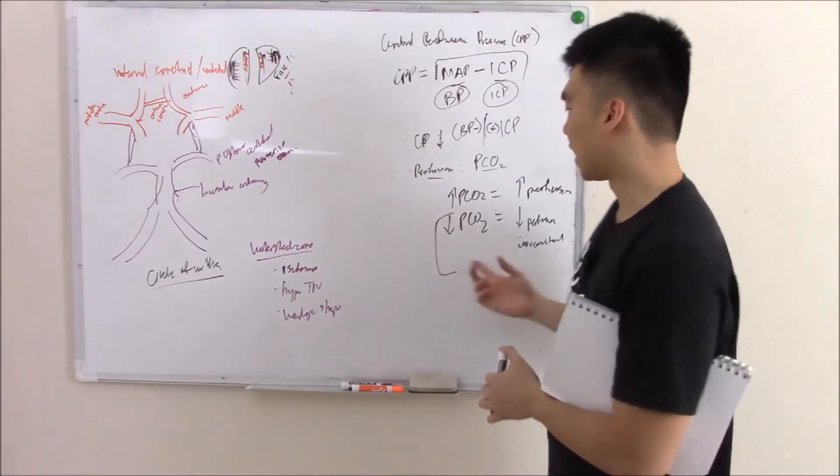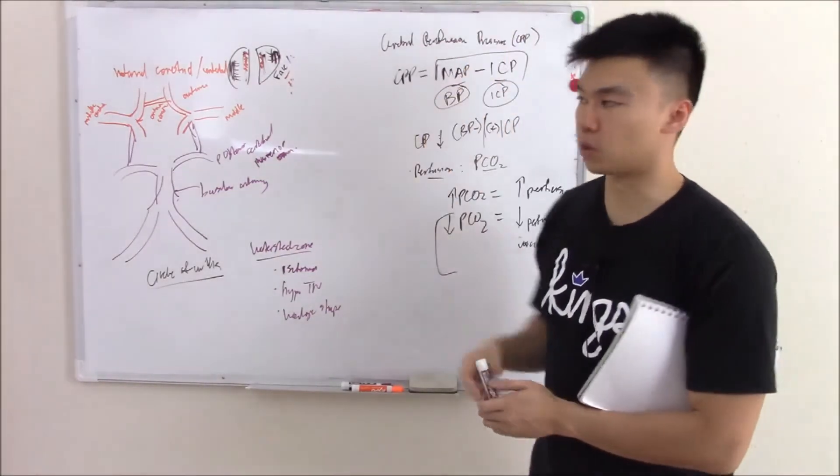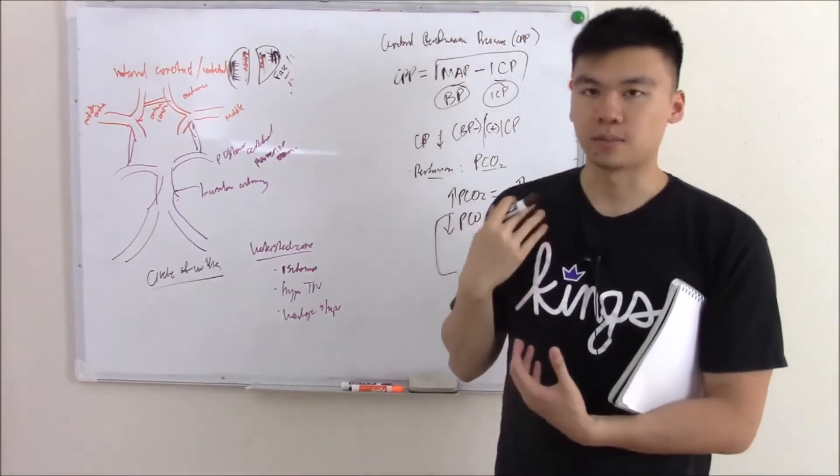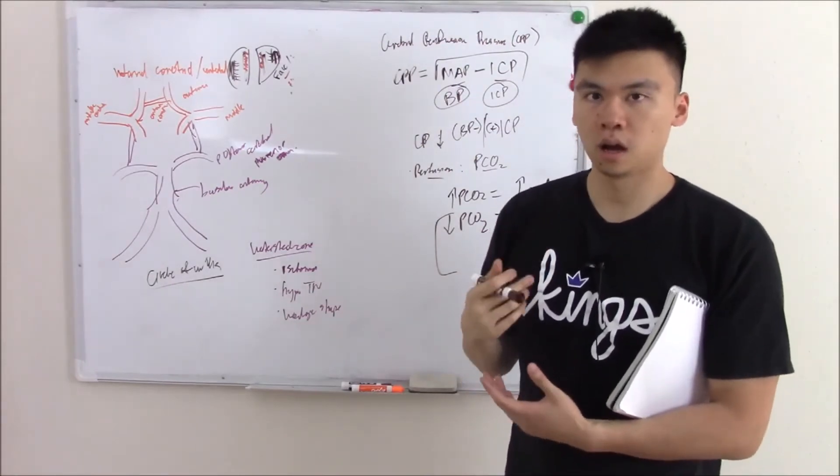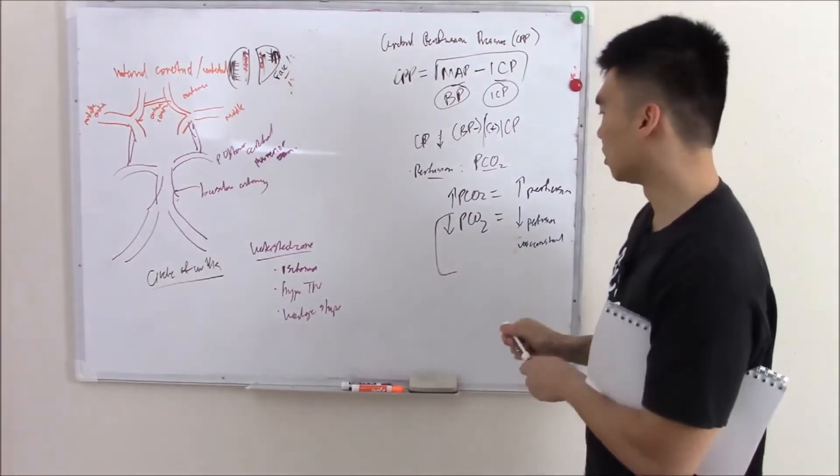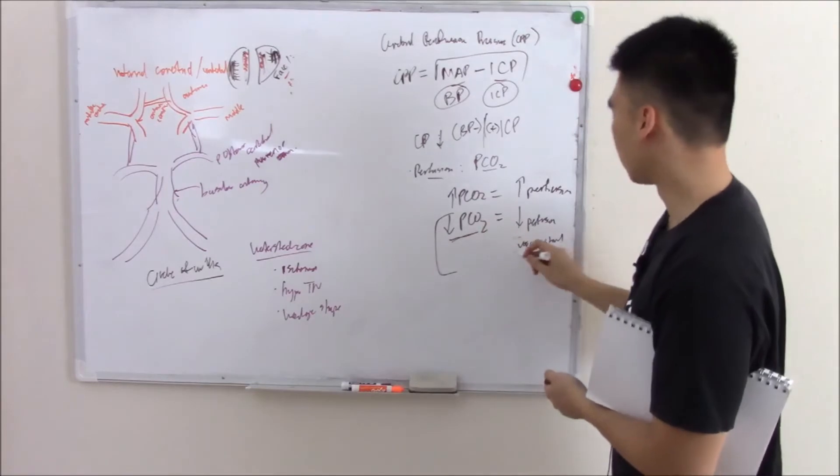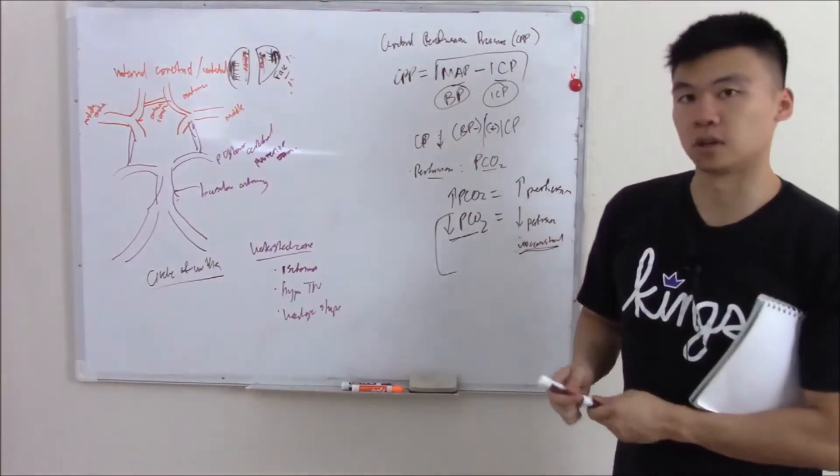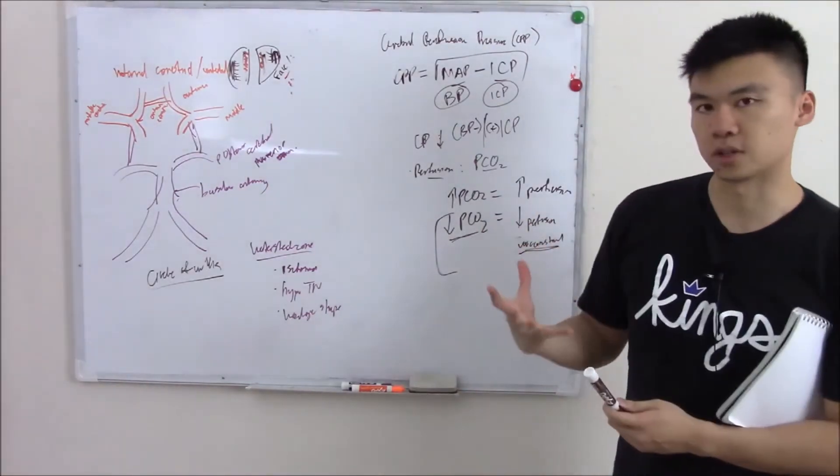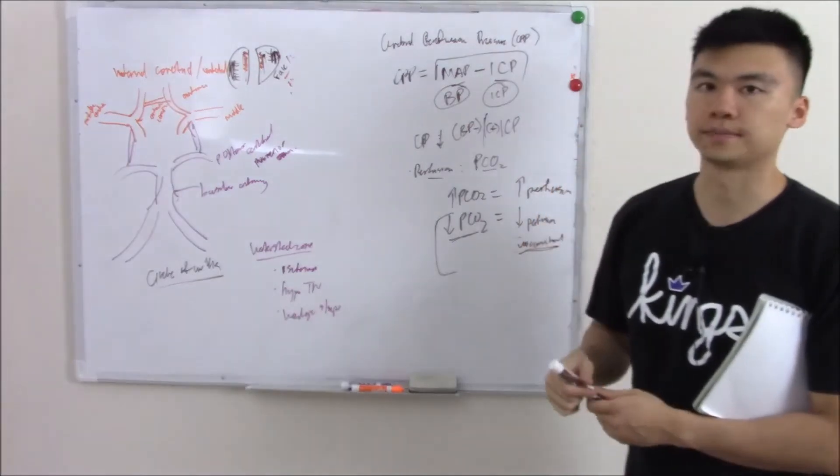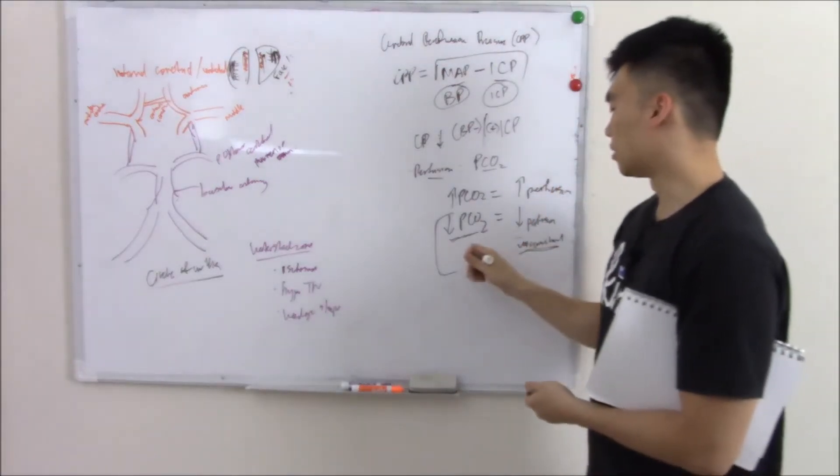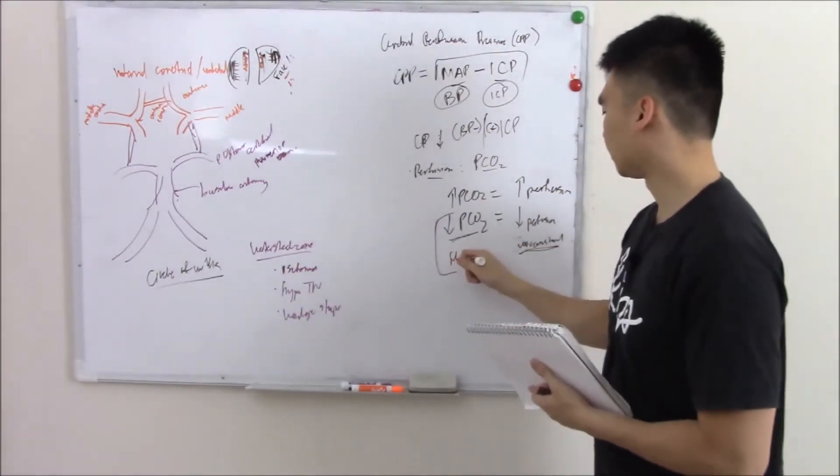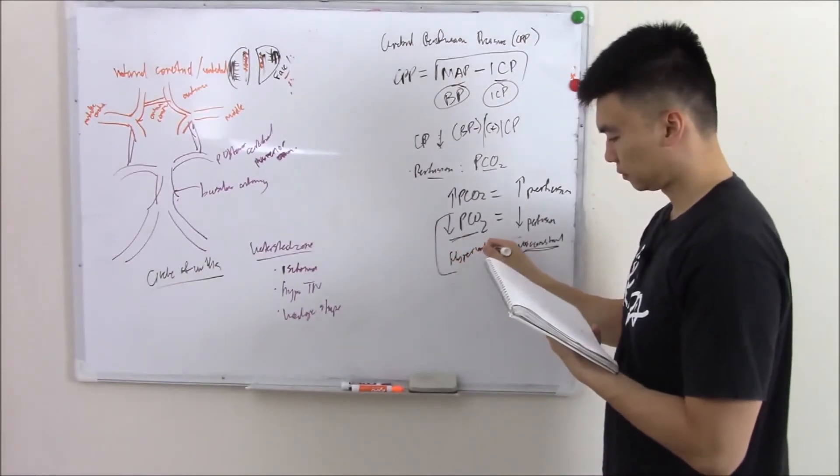And we can use this to our advantage. So if we have increased pressure in our brain for whatever reason, then we can make the patient hyperventilate. Breathe out all that CO2, have reduced CO2. And then you'll start to vasoconstrict and kind of reduce your perfusion pressure, kind of reduce that pressure in your brain. So that's just one way we can use it to our advantage. So I just write hyperventilate.